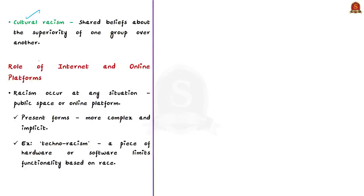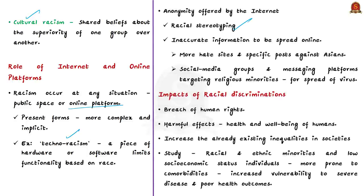Racism can occur in any situation — in a public space or on an online platform. The present form of racism is more complex and implicit, mainly due to the growth of technology and internet. One example is techno-racism, where hardware or software limits functionality based on race. The internet also contributes to racism by offering anonymity, paving the way for racial stereotyping and spread of inaccurate information online.